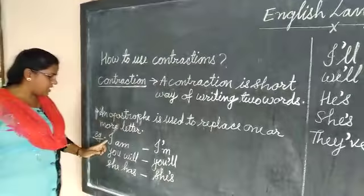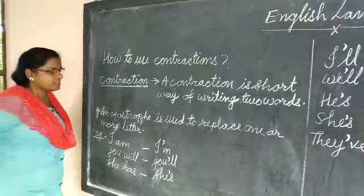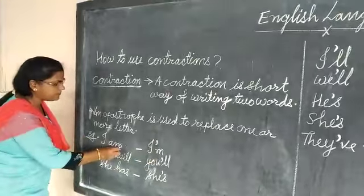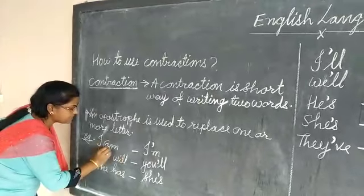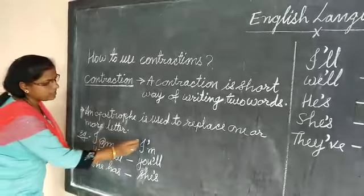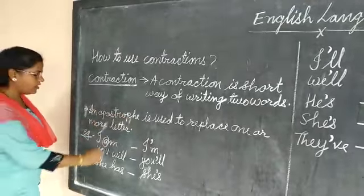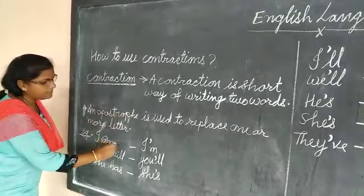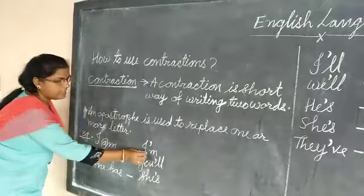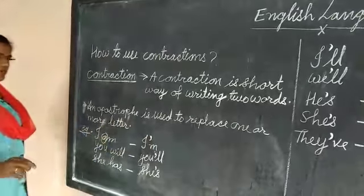Let us understand children. Here, there are two words: 'I am.' And this is the contraction form: 'I'm.' Here, I removed the letter 'a' and replaced it with the punctuation mark, apostrophe. So in 'I'm,' the letter A is missing and that A is replaced by the apostrophe.